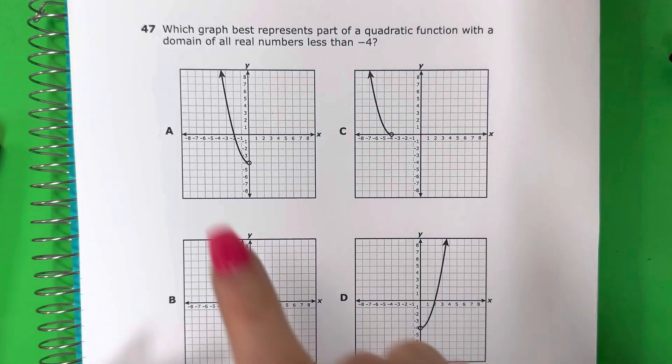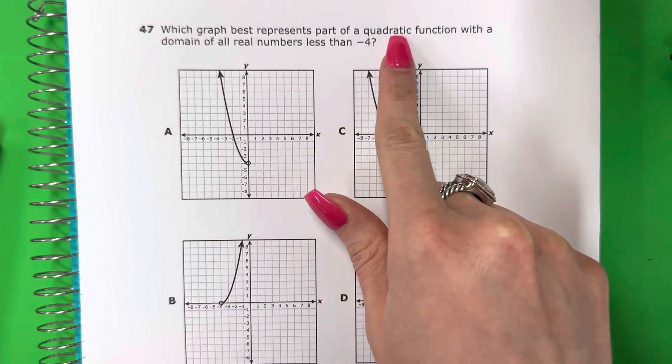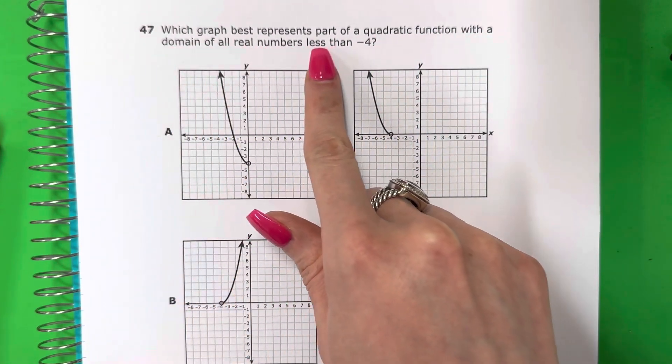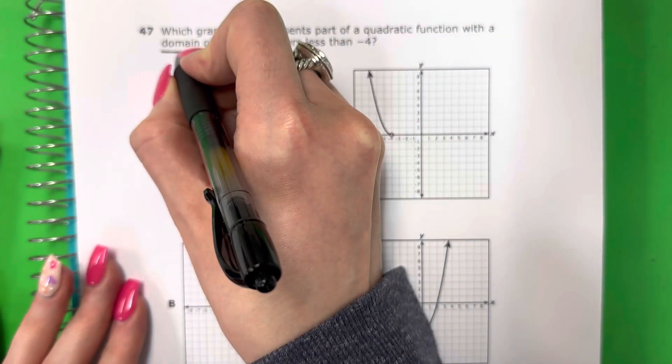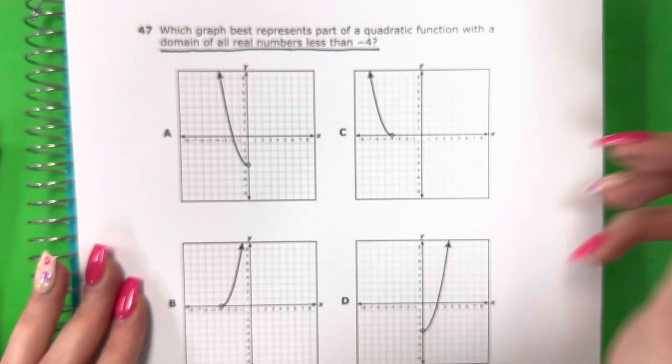Question 47. Which graph best represents part of a quadratic function with a domain of all real numbers less than negative 4? Okay, so I have domain of all real numbers less than negative 4.